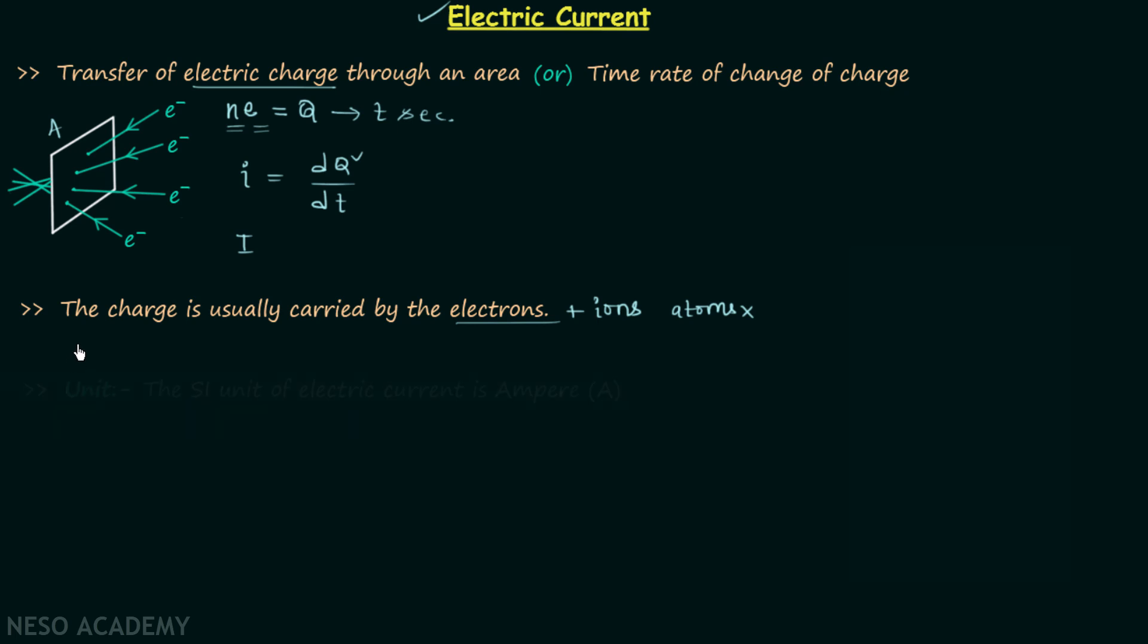Now we will talk about the unit of electric current. The SI unit of electric current is ampere, represented by capital A. It is also represented by amp, but this is an unofficial and informal way to represent ampere.